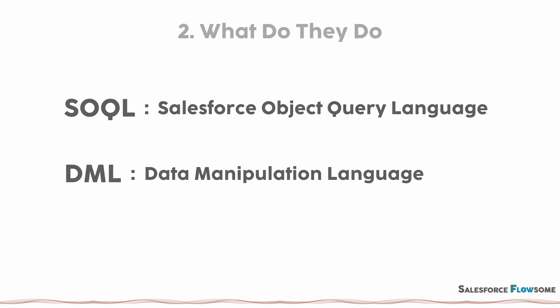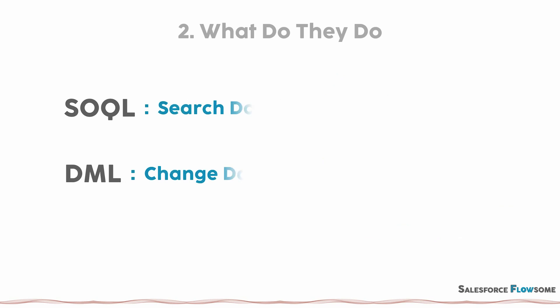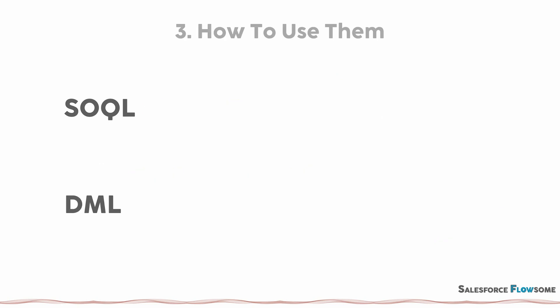Then to find out what they do, see the words in front of 'language.' We have 'query' and 'manipulation.' This explains the functions of these two languages. SOQL is used to search the database, and DML is used to change the database. And to use these languages, you have to write specific syntax.